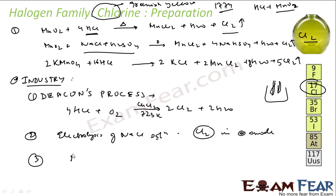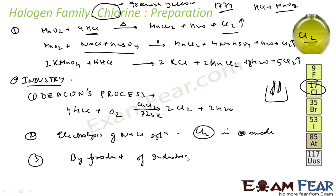Chlorine is also collected as a by-product of many industrial processes. In a lot of reactions, chlorine appears as a by-product and is collected accordingly.